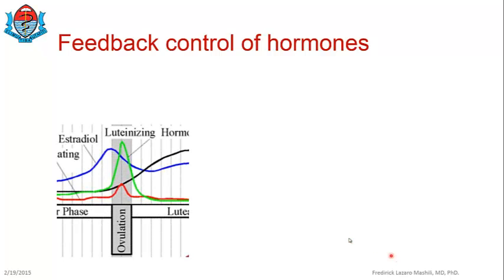Now, with feedback control, take a look at this diagram — these graphs show changes in hormone levels during menstruation. The menstrual cycle is a biological phenomenon where levels of different hormones change at different stages. You can see the blue graph here, which represents estradiol (estrogen), and the green graph which represents luteinizing hormone. What you can see is an increase in the level of estradiol, or estrogen.